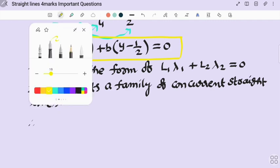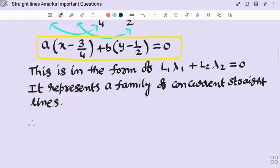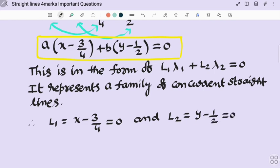From this we need to conclude, L₁ = x - 3/4 = 0 and L₂ = y - 1/2 = 0. These are the concurrent lines. So they are asking to find point of concurrency also. Now solving these two equations.